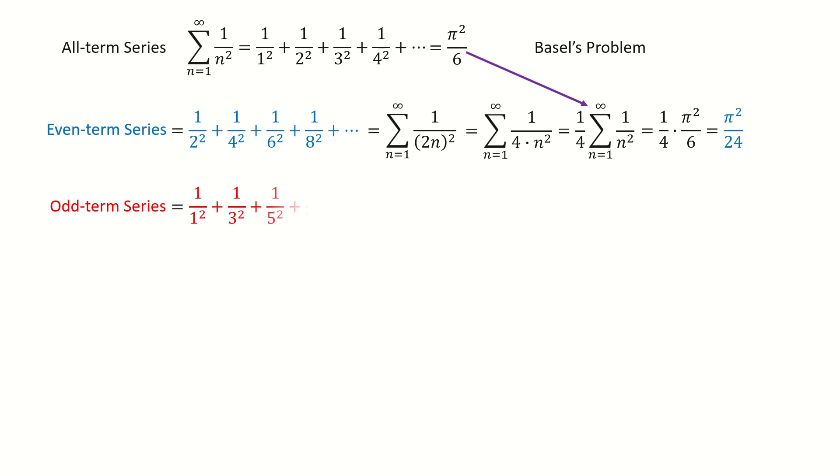Next, let's look at the odd term series. We know the odd term series equals the all term series subtract the even term series. So we plug in the previous result, and we got the answer for the odd term series.